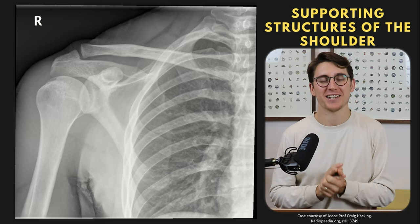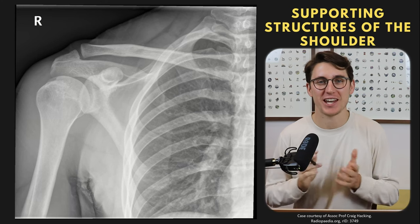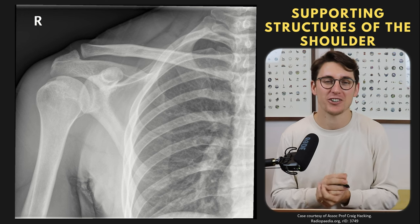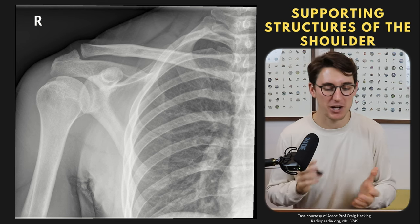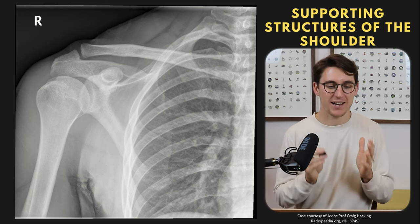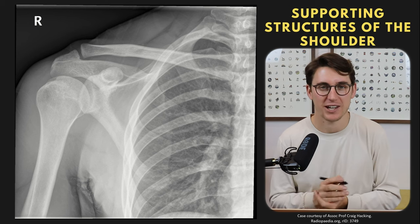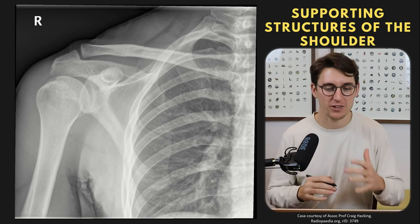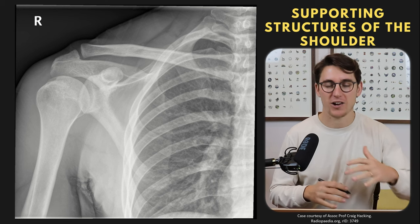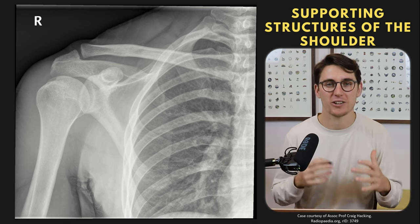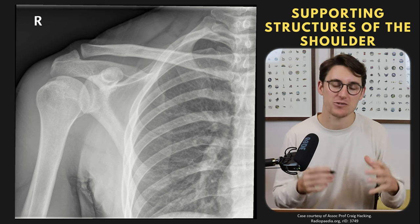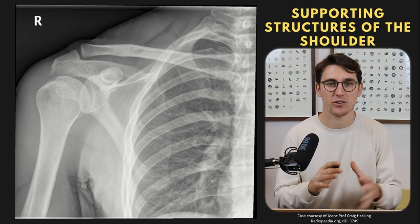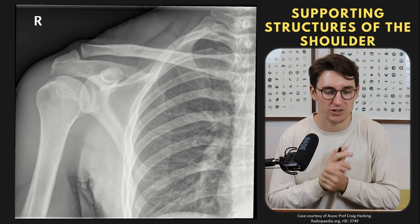Hello everybody and welcome back to another anatomy video. Today we're going to be looking at the anatomy of the shoulder in some detail on an MRI scan. You might be wondering why I have an X-ray up — I want to make sure we're all on the same page. With MRI, a single slice can confuse people because their understanding of the surrounding anatomy is poor, so I want to cover those anatomical structures on an X-ray first.